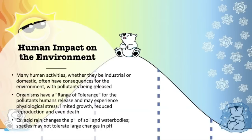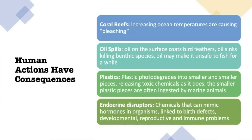Other examples beyond temperature include things like acid rain changing the pH of soil and water bodies. Species may not tolerate those changes in pH. For example, amphibians have a very narrow range of tolerance when it comes to pH, and they will experience physiological stress symptoms if the change is more than they can handle. Now that we know human actions can have major impacts on the environment, let's look at specific examples you should be familiar with for the exam.